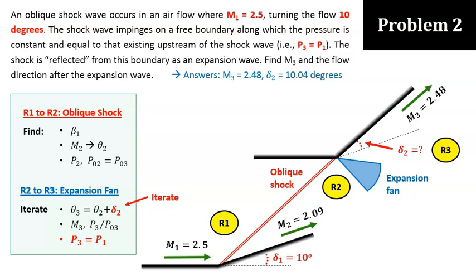The calculation process across the expansion fan is rather straightforward, with the stagnation pressure remains the same across the fan, i.e. P03 equals to P02. After going through a couple of iterations, you should get delta 2 to be 10.04 degrees and M3 to be equal to 2.48.